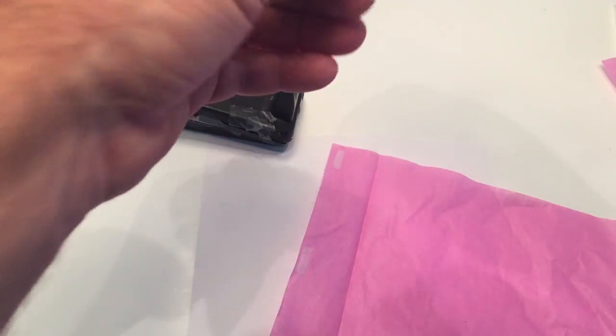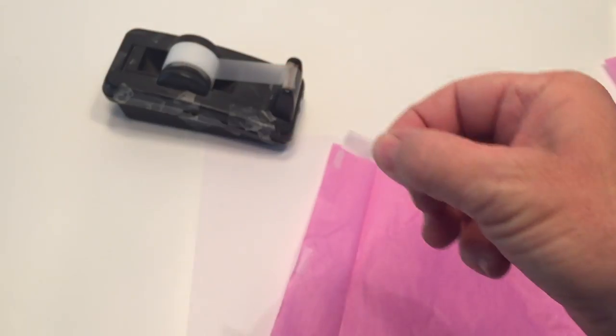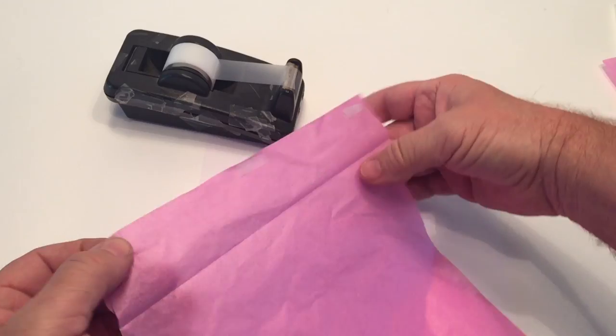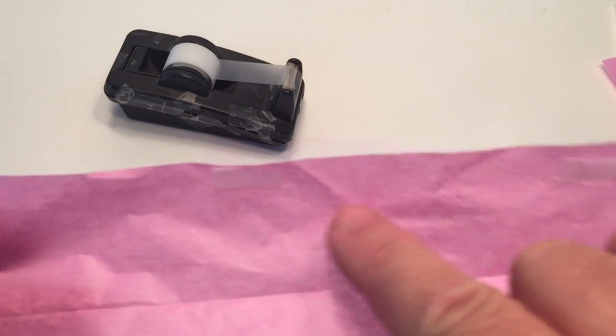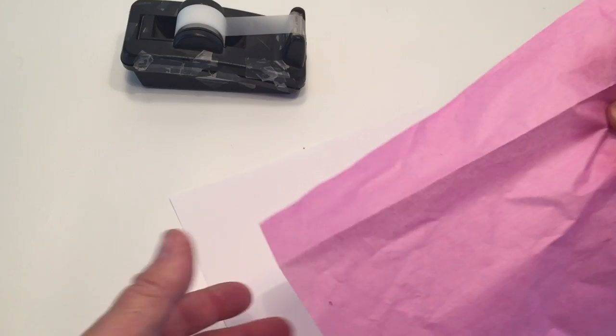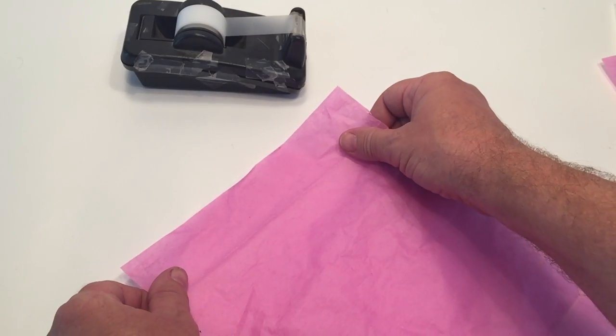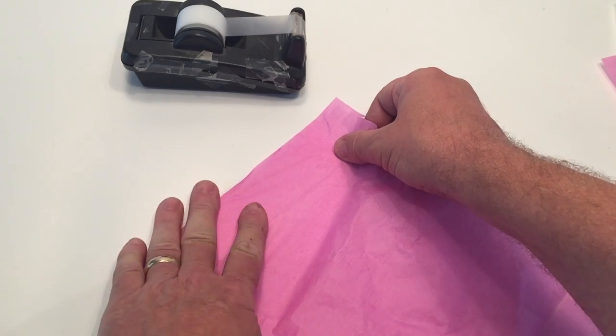Now I'm going to stick that tissue paper onto the regular piece of paper that I want to put into the printer. Very carefully align it to the top of the paper and make sure it's spread out evenly, and then just press down on those three pieces.